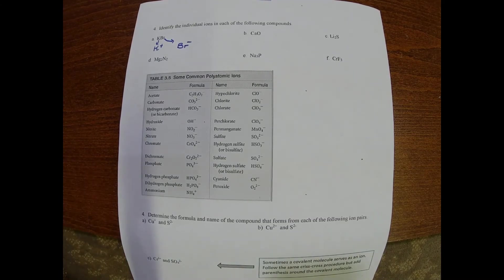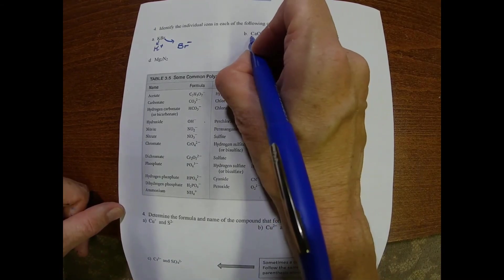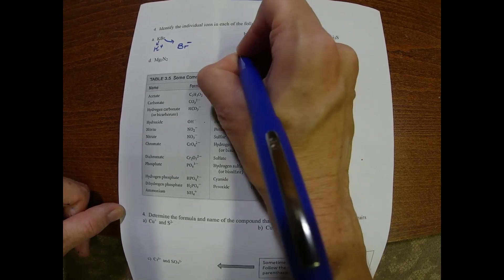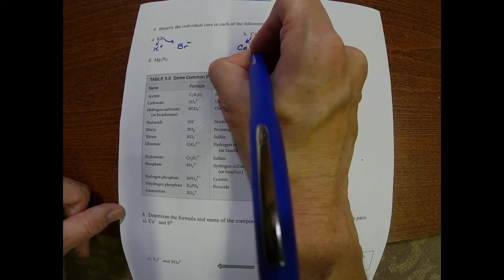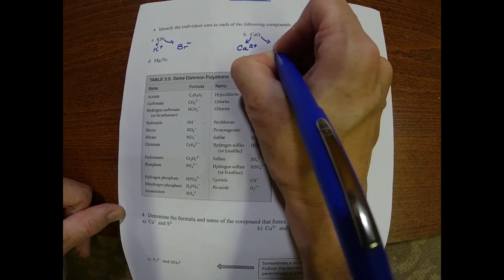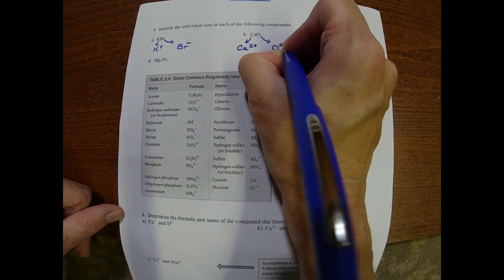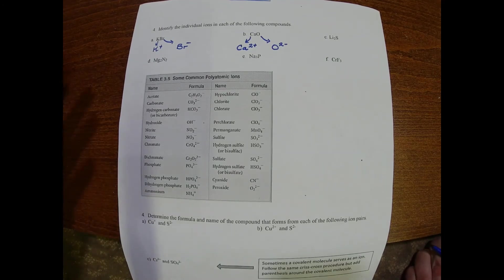It gets trickier because we are writing these ionic compounds as empirical or reduced formulas, so be careful. What I mean by that - in letter B, if we look at our periodic table, calcium is in group 2 so it should have a +2 charge, and oxygen is in group 6 so it has a -2 charge. Then that begs the question, well why is it written the way it's written?